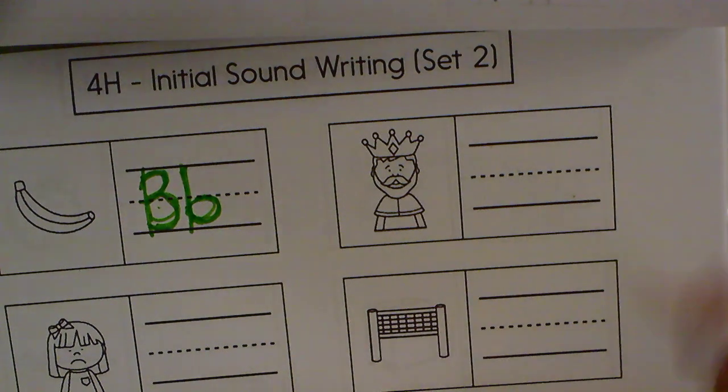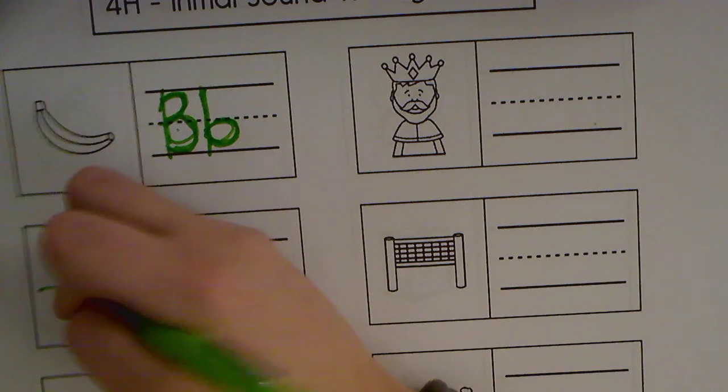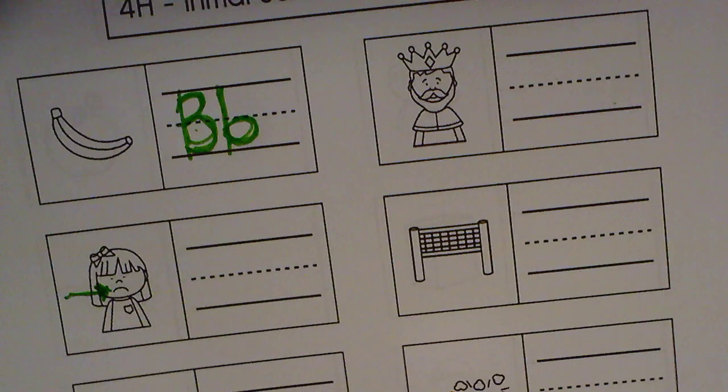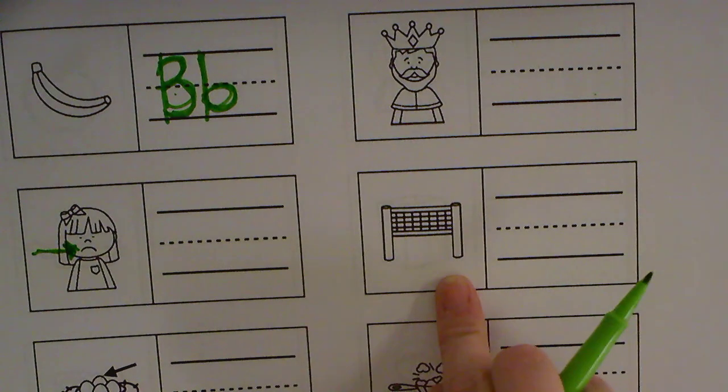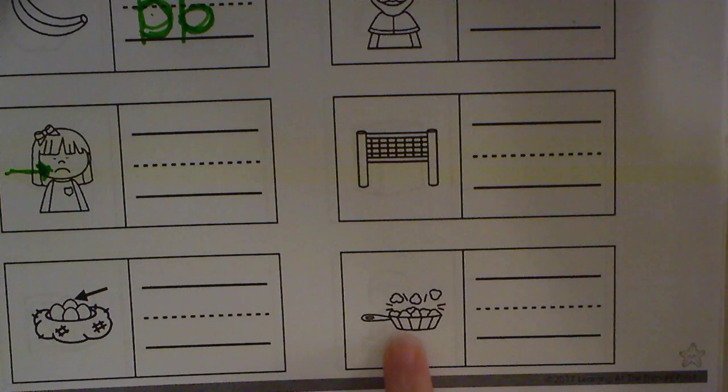All right, so then we have a king, and we have a, I think she's frowning, so just make sure you use the frown. Then we have a net, we have an egg, and we have some popcorn.